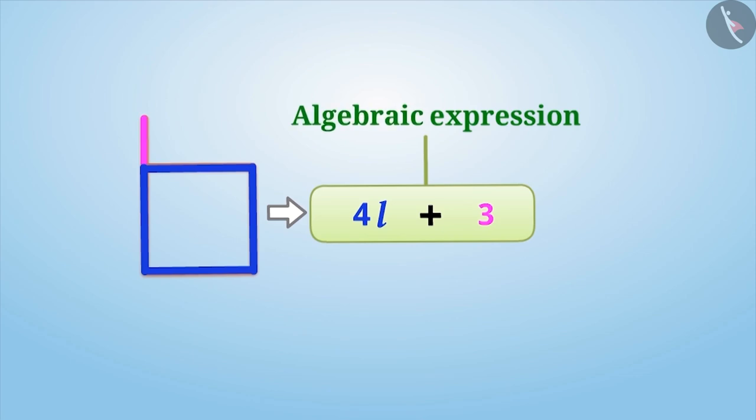Expressions are made of some parts consisting of numbers and variables such as 4L and 3, which are separated by the plus or the minus sign. These are called terms of the expression.